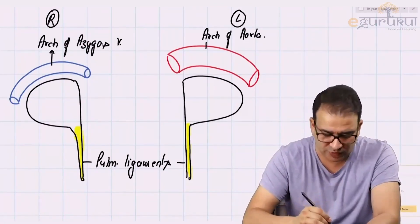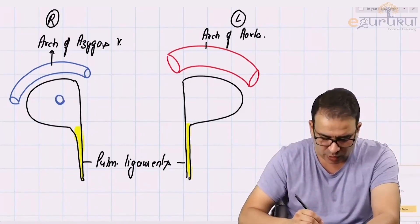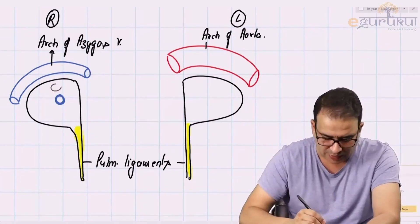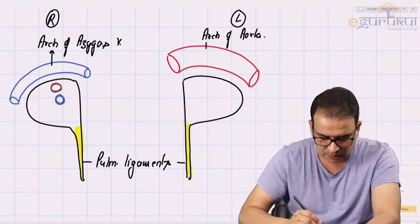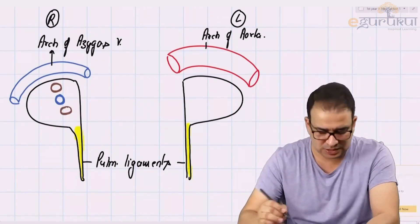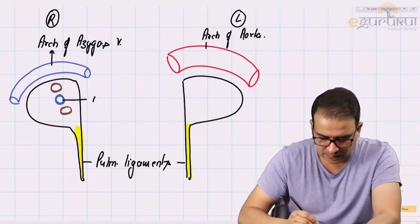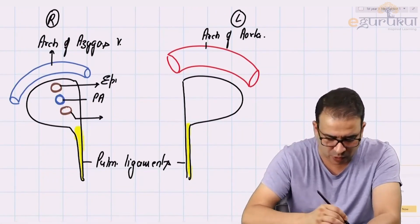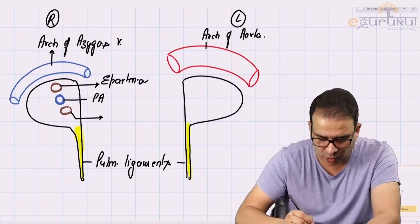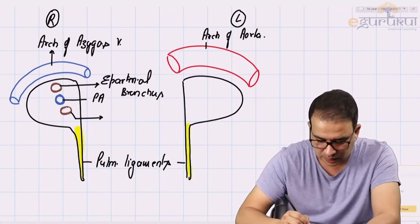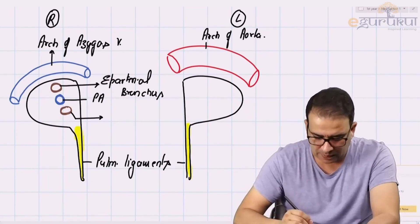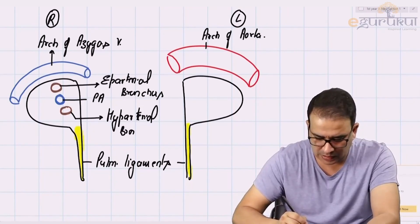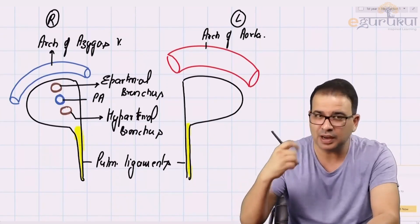When you look at the right root of the lung, you will be looking at the pulmonary artery — drawn here in blue. Above and below the pulmonary artery, we have these bronchi. The bronchus above the artery is called the eparterial bronchus — note it is bronchus, not bronchial. Below the pulmonary artery is the hyparterial bronchus. So we have the eparterial bronchus above the pulmonary artery and the hyparterial bronchus below it.